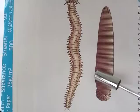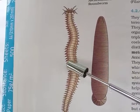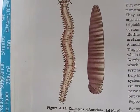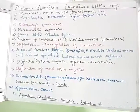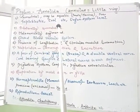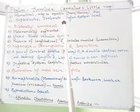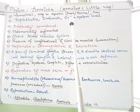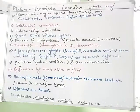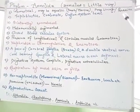The members have a segmented body, just looking like ring-like structures placed one above another. The members may be terrestrial or aquatic. If aquatic, they may be present in fresh water or marine water. The members may be free-living or parasitic life forms.